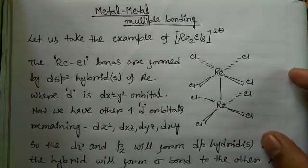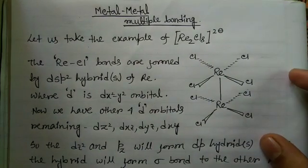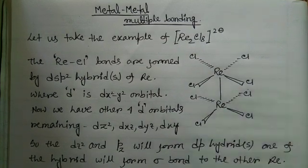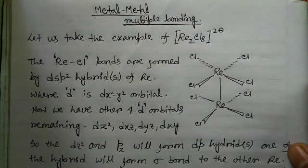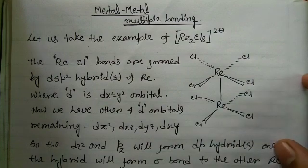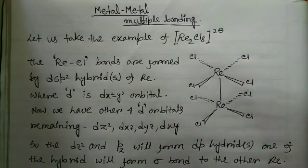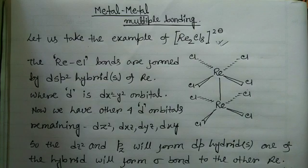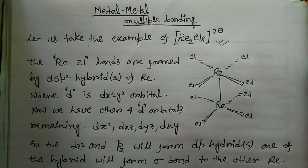Welcome to Chemistry Lover. In this video I am going to discuss how you can calculate the number of metal-metal bonds, that is the metal-metal bond order in a certain complex, because questions from this particular topic appear in different exams. We will start with the representative example of the di-rhenium octachloro complex with a 2 minus charge.